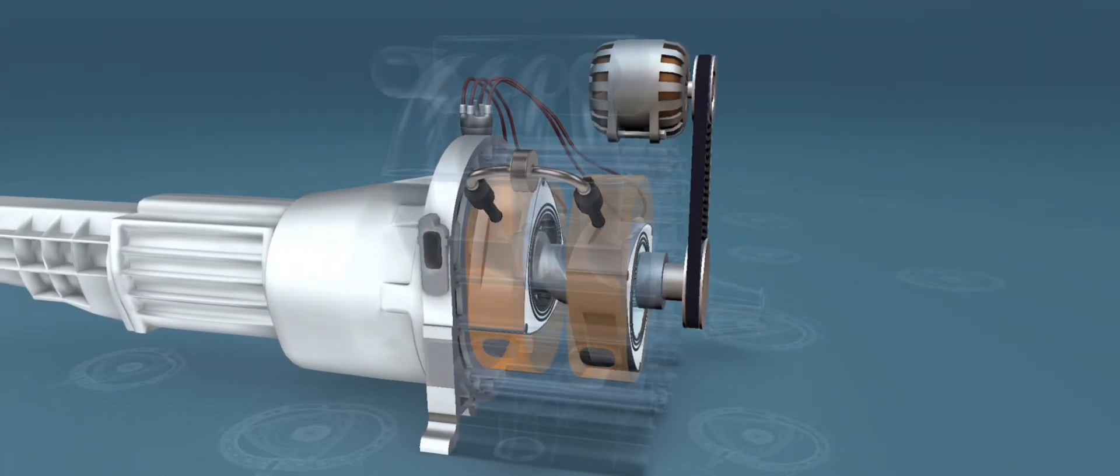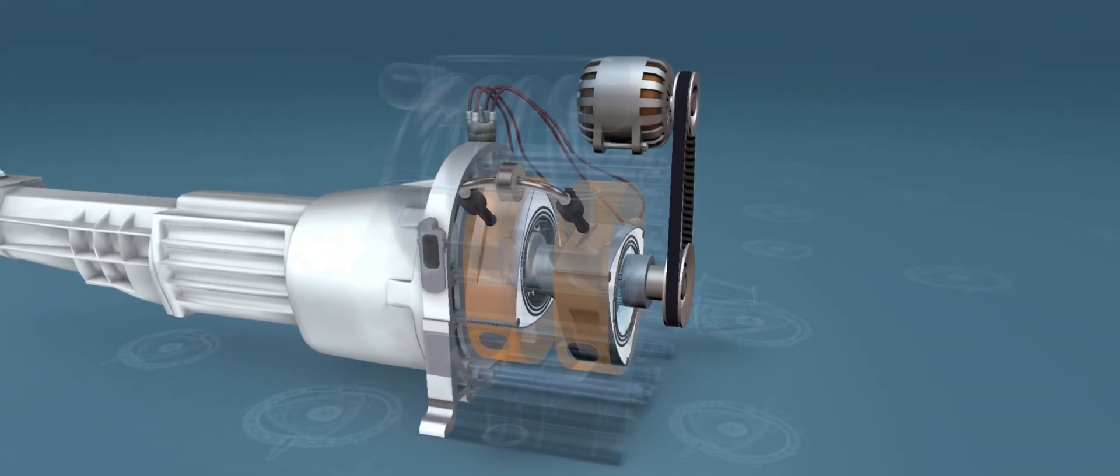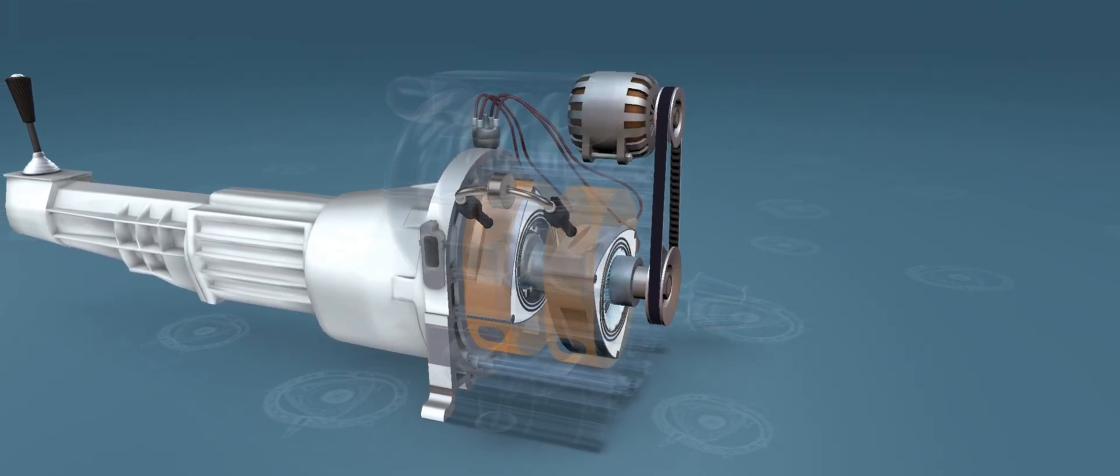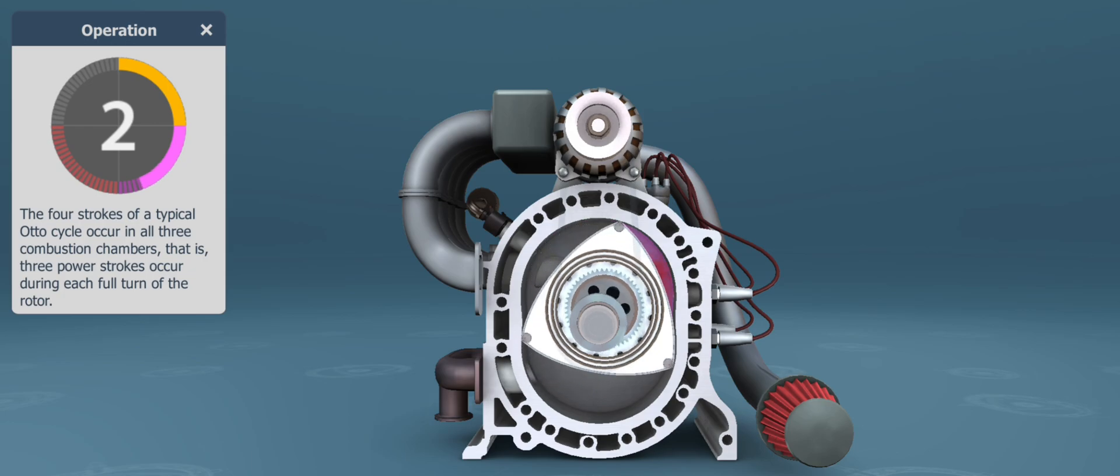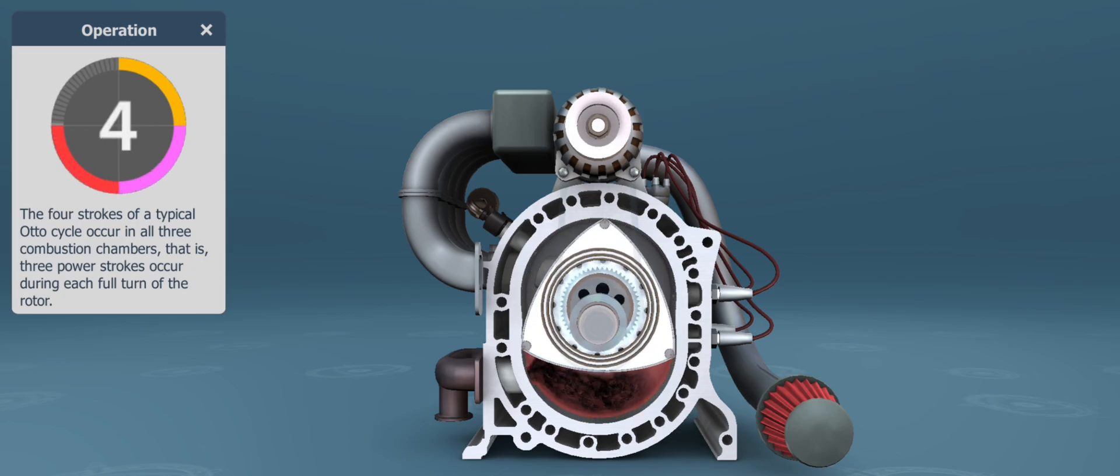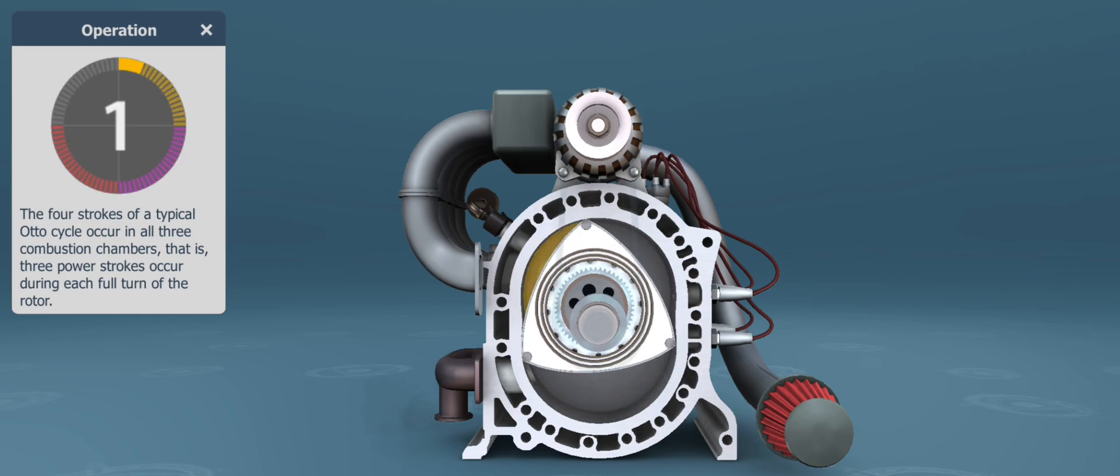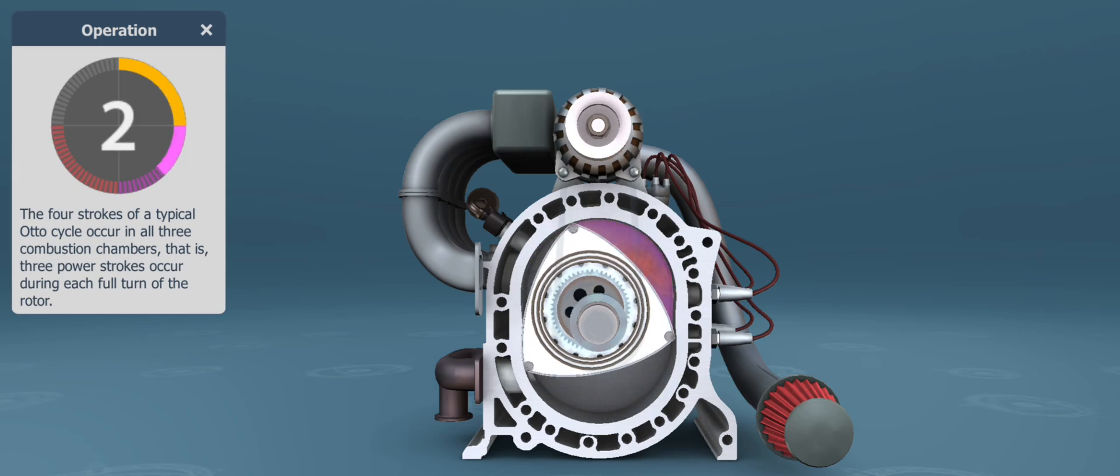Unlike four-stroke auto and diesel engines, the Wankel engine contains rotary pistons. The spark plug ignites the mixture of air and petrol in the engine. The explosion pushes the rotary piston and the shaft turns.